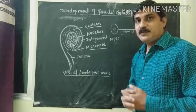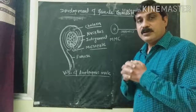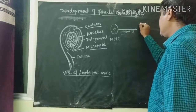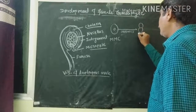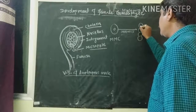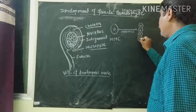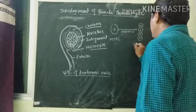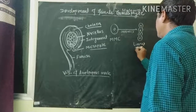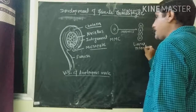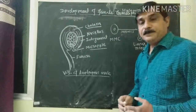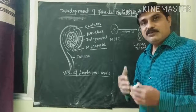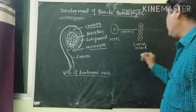Since meiosis is the reduction division, there is a reduction of chromosome number, resulting in the formation of four haploid megaspores. This is known as the linear tetrad. Here only a linear tetrad is present, while in male gametophyte there are various kinds of tetrad forms, but here only a linear tetrad is produced.